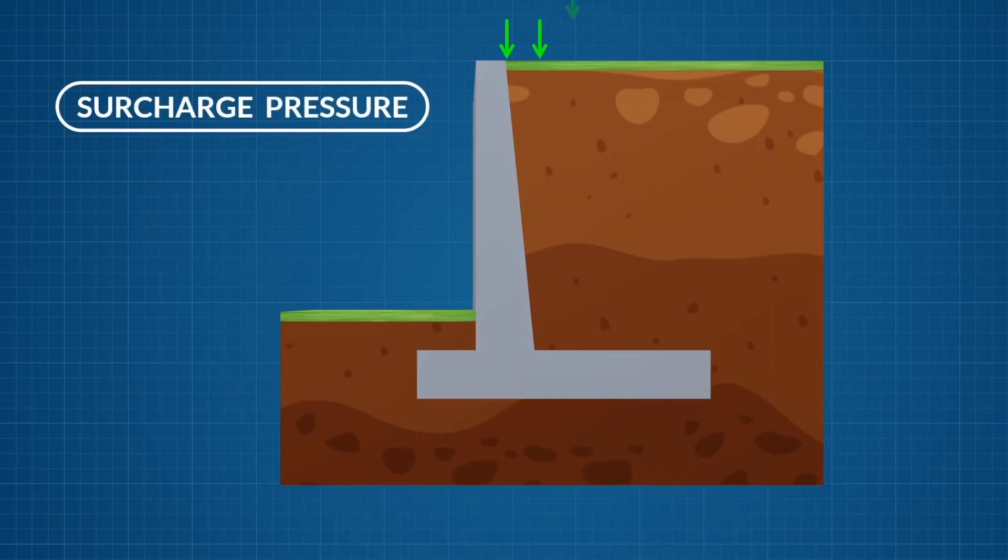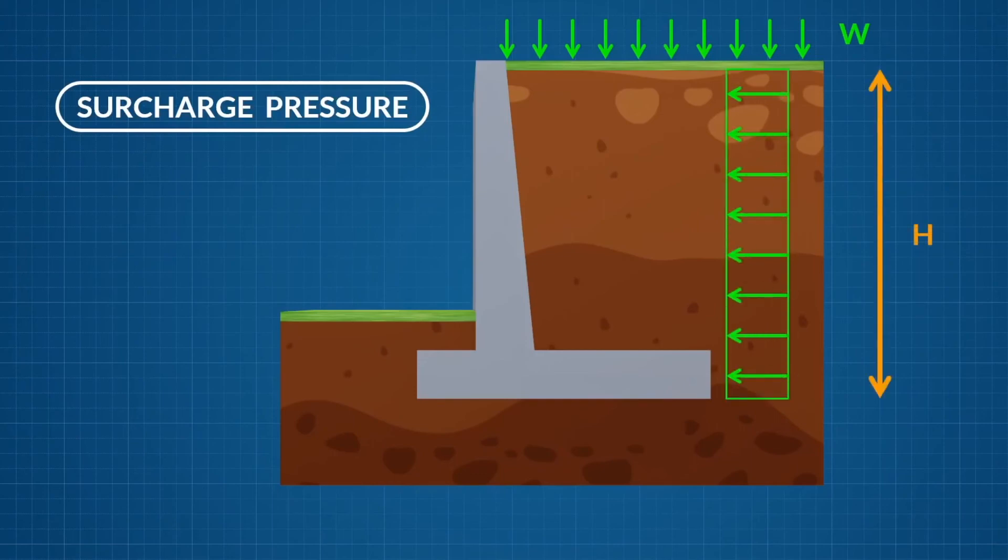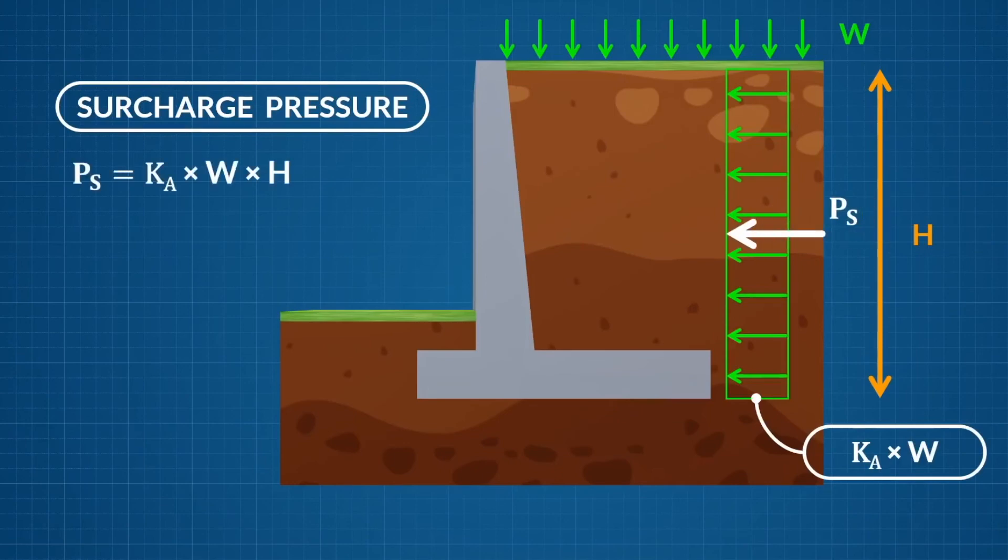The final consideration is any additional surcharge. This surcharge contributes to active earth pressure. The nature of the surcharge can, for example, result from vehicles or construction operations. Let's say the surcharge has an intensity of W kN per m² and is uniformly distributed. This pressure will act laterally on the wall with an intensity of Ka times W. The force due to this surcharge is the area of the rectangle which is Ka times W times height.